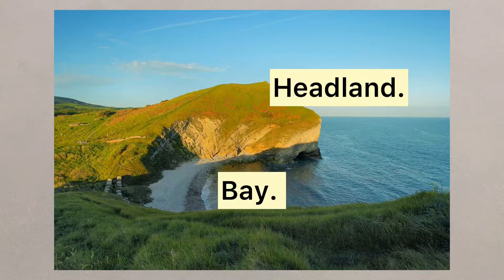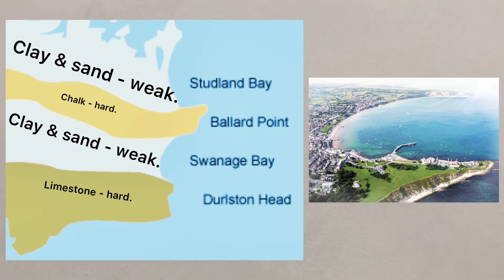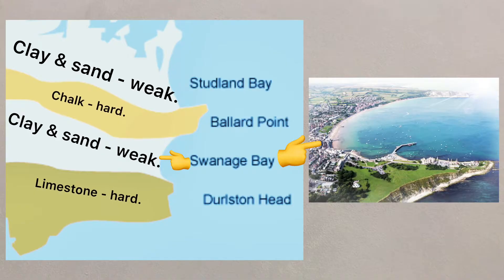Headlands and bays are two such landforms and are created through the erosion of neighbouring rock at different rates. Weaker rock will erode more quickly than hard rock, so the weaker rock becomes a bay where deposition can occur and beaches will develop, whereas the stronger rock will develop into a headland.